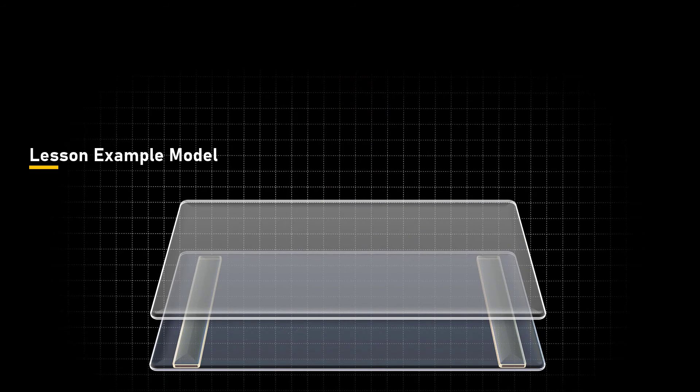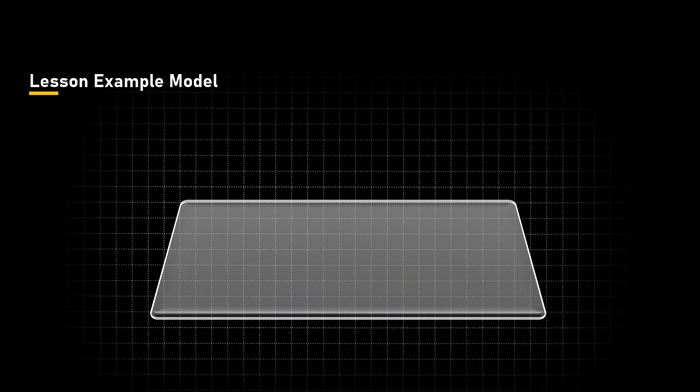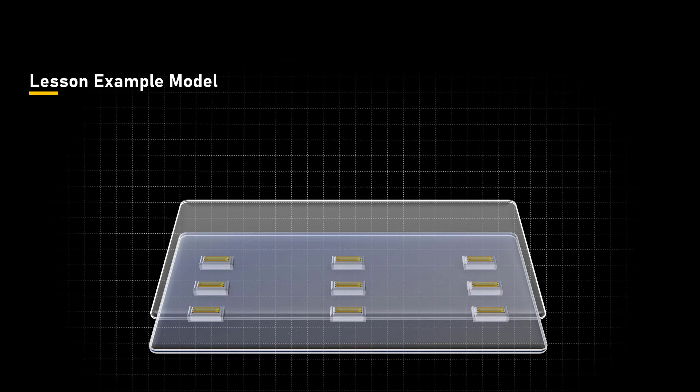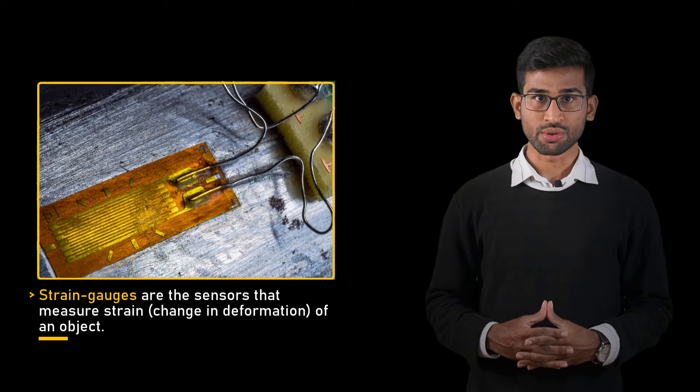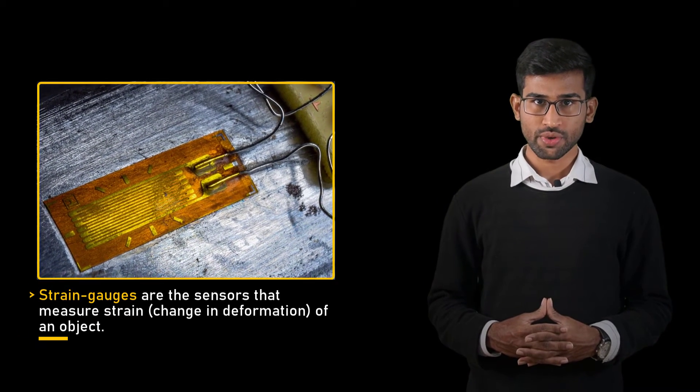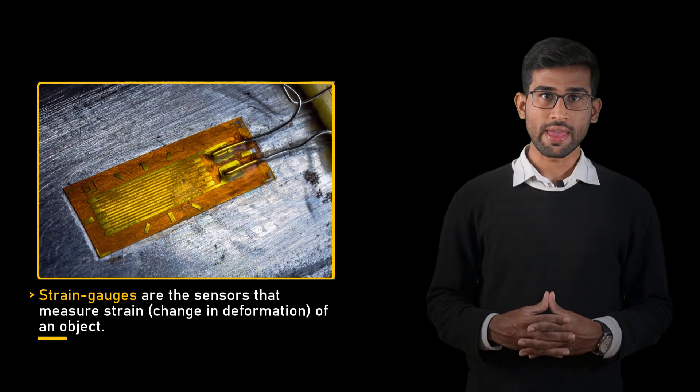In this lesson's example, the touchscreen capacitor layer is replaced by strain gauges underneath the top layer. Strain gauges are sensors that measure the strain or change in deformation of an object. For those of us coming from a more AI/ML background, let's quickly define deformation and strain.